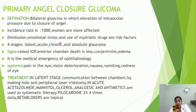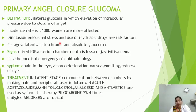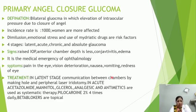Signs include raised intraocular pressure, shallow anterior chamber depth, conjunctival edema. It is a medical emergency in ophthalmology. Symptoms are eye pain, visual deterioration, nausea, vomiting, and redness of the eye. In the latent stage, we create a communication between the anterior and posterior chambers. In the acute stage, we use acetazolamide, mannitol, acetylsalicylic acid, and anti-emetic drugs.